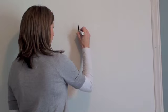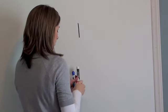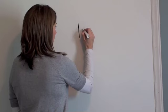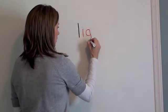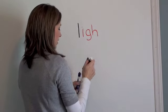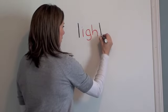Light. Draw the L in black. I, G, and H will be in red. And again T will be in black.